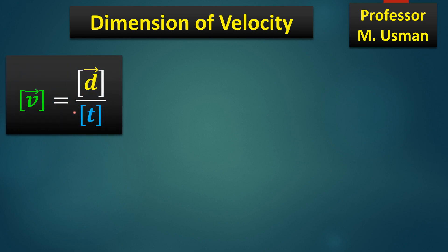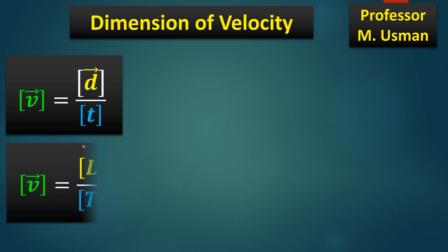As you know, displacement is basically length, so the dimension for length is capital L, and the dimension for time is capital T. These symbols are enclosed within square brackets to represent the dimensions.